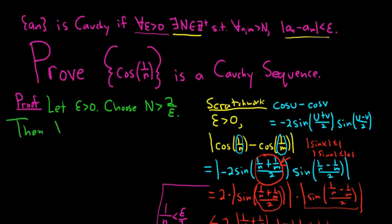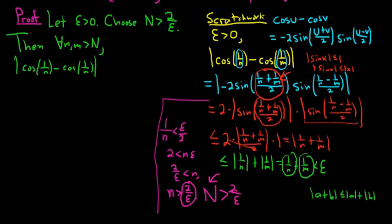So then, for all little n and little m greater than capital N, we're going to look at the difference. Cosine of 1 over n minus cosine of 1 over m. And now we're going to use that trig identity that I'm sure you all have memorized. When you have problems like this, hopefully you have resources so you can look for identities. It's really easy to forget some of these trig identities. So rewriting down what we have over there, I'm just copying it down.